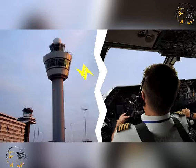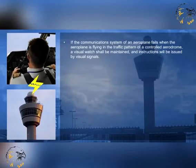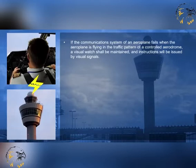This specifies the requirement for air-to-ground communications equipment and the radio frequencies allocated to the aeronautical telecommunications network. If the communication system of an aeroplane, receiver or transmitter, fails when the aeroplane is flying in the traffic pattern of a controlled aerodrome, a visual watch shall be maintained and instructions will be issued by visual signals.